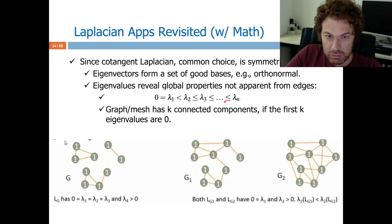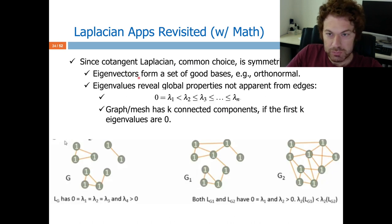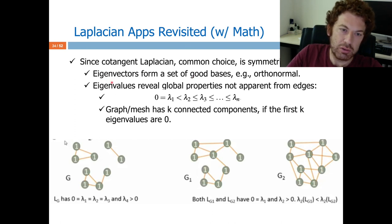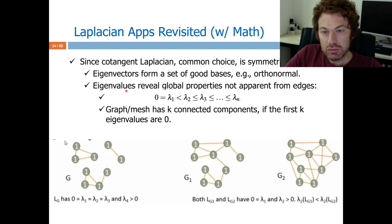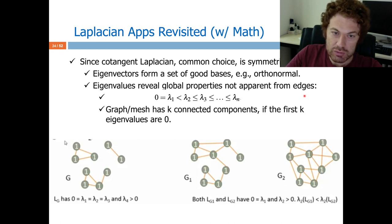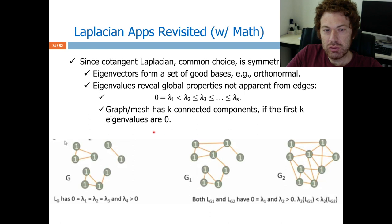Now let me take a quick break from applications and talk about the spectrum of the Laplacian matrix, because we will use it a lot. The spectrum consists of eigenvalues and eigenvectors. Eigenvectors are orthonormal, which is nice. But eigenvalues reveal global properties that cannot be understood by just looking at the edge structure. One property: if you have k connected components in your mesh, you will have k zero eigenvalues — sort them in ascending order and the first k will be zero.